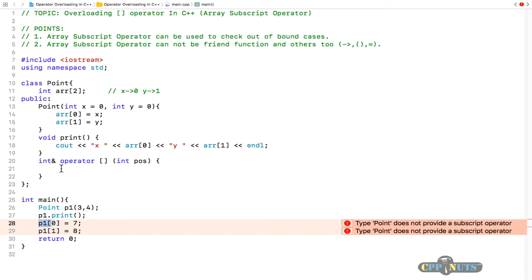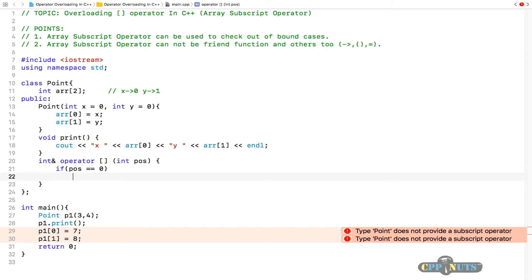You will understand once I write the code. If position is equal to zero, we will return arr[0].